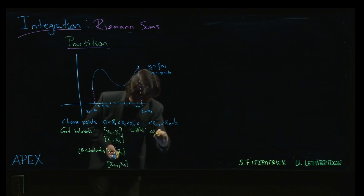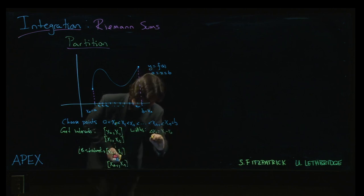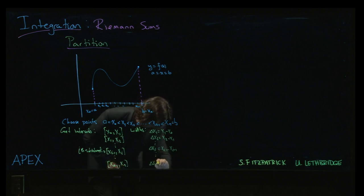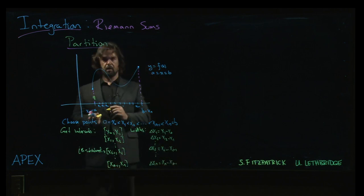So there would be a delta x1, which would be x1 minus x0. Delta x2 would be x2 minus x1, and so on. Delta xi would be xi subtract xi minus 1, and so on down to the last one, xn subtract xn minus 1.